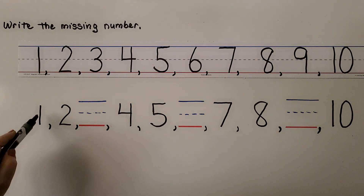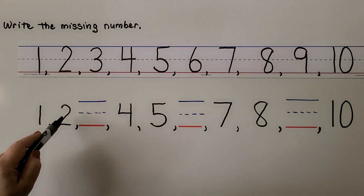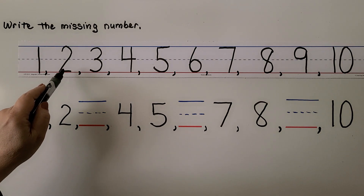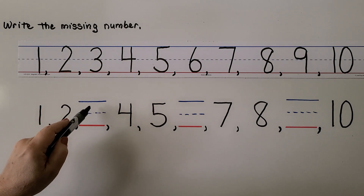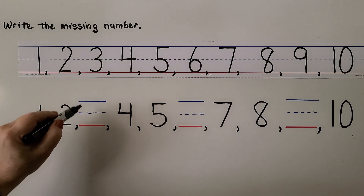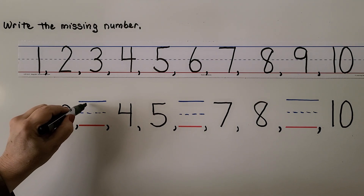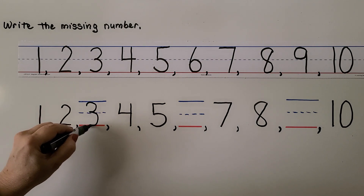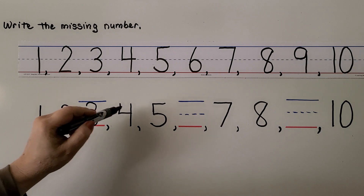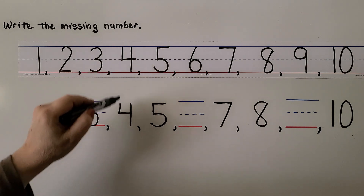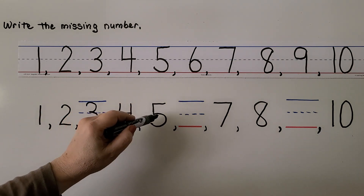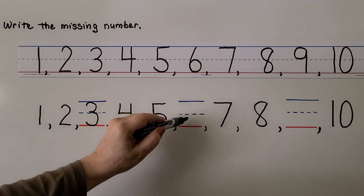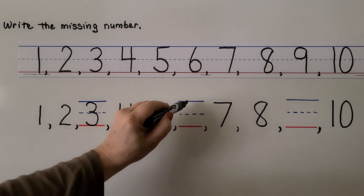I see 1, then 2, and here we have a blank — so 3 is the missing number. Then I see 4, 5 — this must be 6.